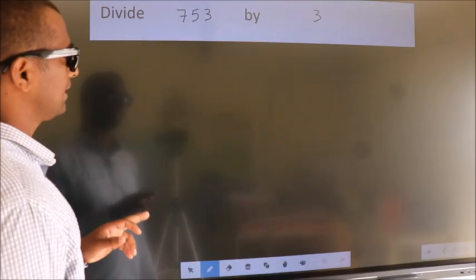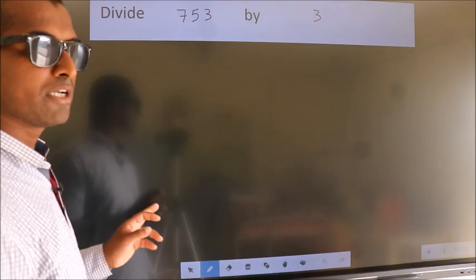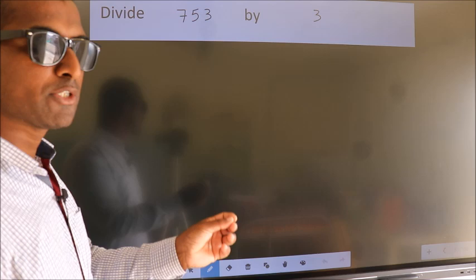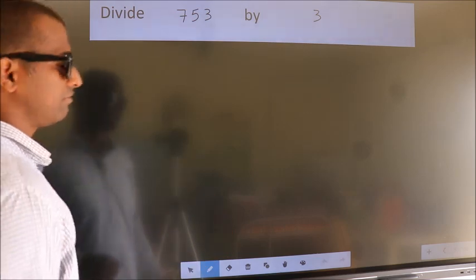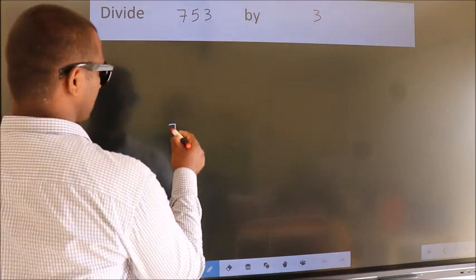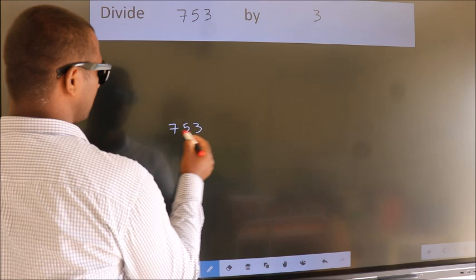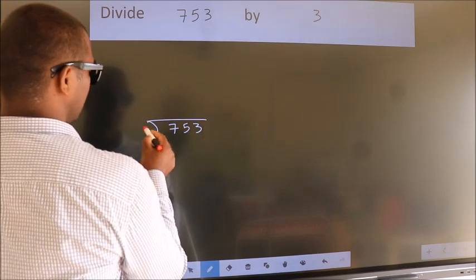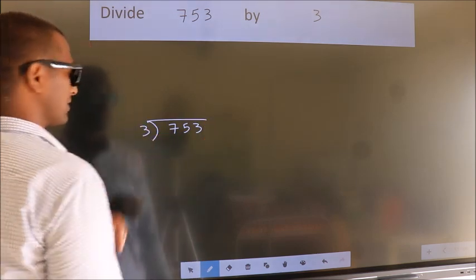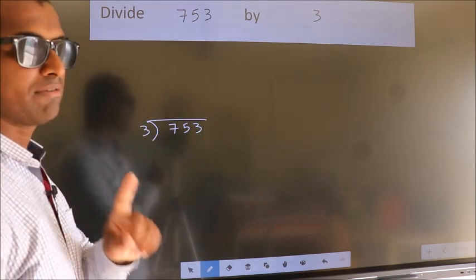Divide 753 by 3. To do this division, we should frame it in this way. 753 here, 3 here. This is your step 1.